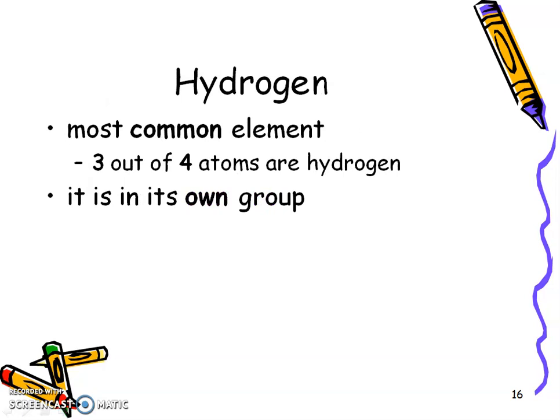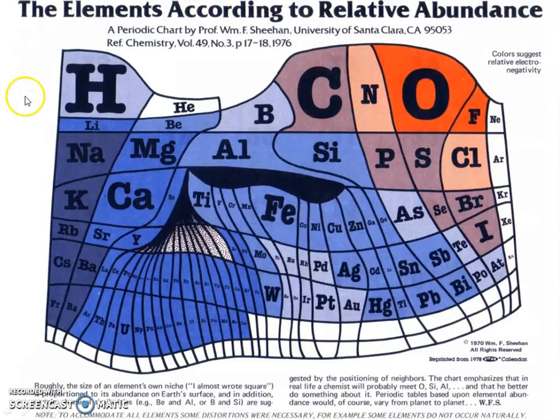Hydrogen is very unique, and it's going to be its own group. He is a very common element. Three out of four atoms are actually hydrogen atoms. And so this is a really neat periodic table, because this shows you the abundance of all of these elements. And I thought that was pretty neat.